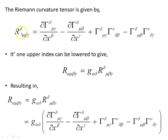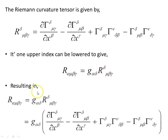The Riemann curvature tensor has one upper index which can be lowered to give an object with all four indices lowered, by using the metric. This results in the product of the metric tensor and the Riemann curvature tensor. The next step will be to expand this out.